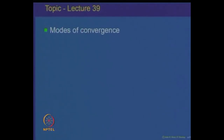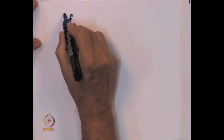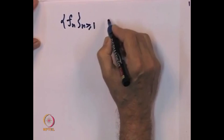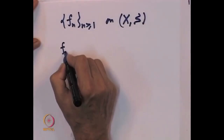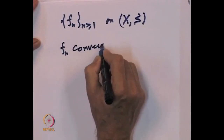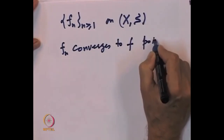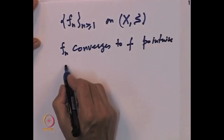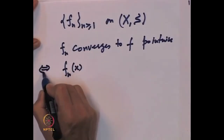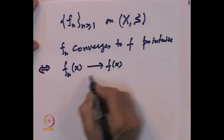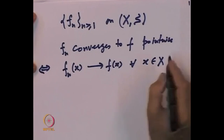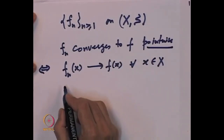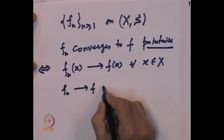Let us recall some of the ways of convergence that you might have already looked into in earlier courses. Let us take a sequence of functions F_n on a measurable space X. Saying that F_n converges to F pointwise means that F_n(x) converges to F(x) — these are numbers — for every x belonging to X. You might have already come across something called F_n converges to F uniformly.